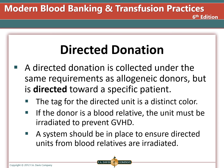A directed donation is when a donor donates blood for a specific patient. These units can only be used for that specific patient. If the donor is a blood relative, the unit must be irradiated to prevent graft-versus-host disease, and there should be a system in place to ensure that directed units from relatives are irradiated. This practice is not encouraged, as some people who should not donate blood may feel pressured to donate by family members.